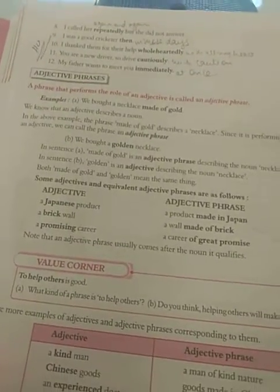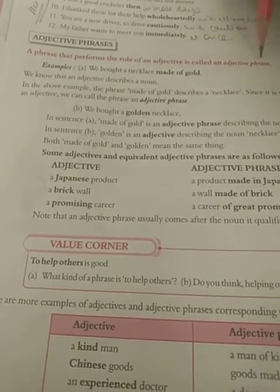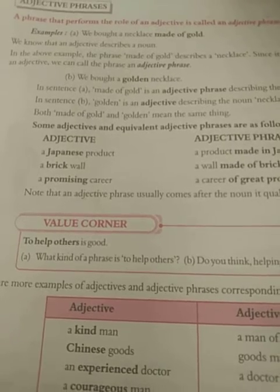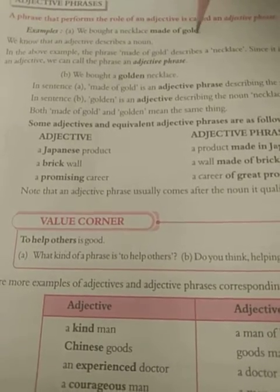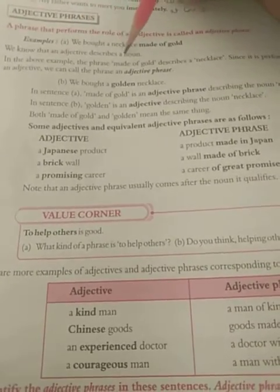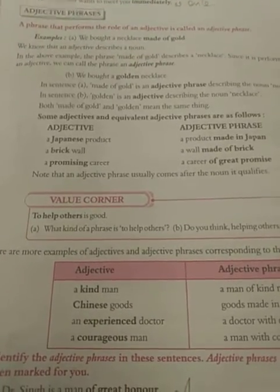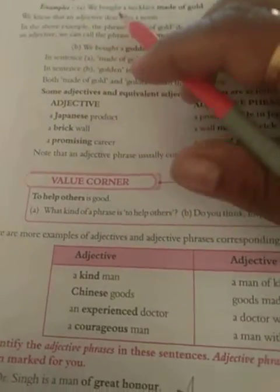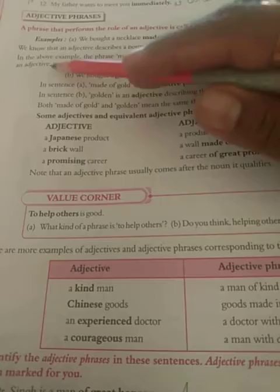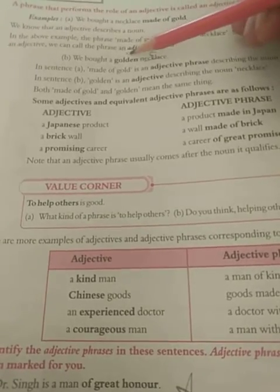Now come to the adjective phrase. A phrase that performs the role of an adjective is called an adjective phrase. For example: 'We bought a necklace made of gold' — 'made of gold' is your adjective phrase. We know that an adjective describes a noun. The phrase 'made of gold' describes the noun 'necklace'. Since it is performing the function of an adjective, we call it an adjective phrase.